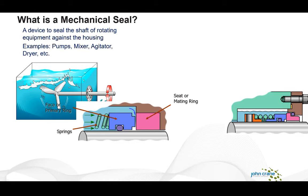Supporting the seal face is an elastomer or O-ring and a closing force, typically created by a spring, which keeps the seal faces closed and in contact. A very simple design — stationary seal face, rotating seal face, a spring, and a retaining unit — this is the basic design for every mechanical seal and how it functions.